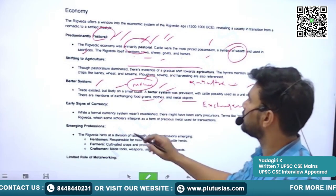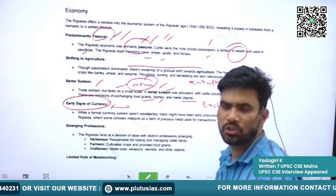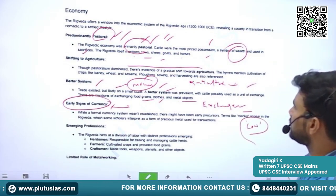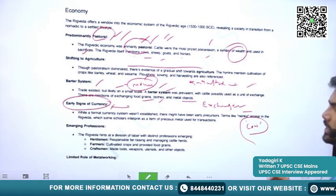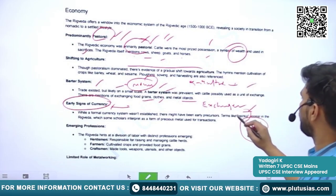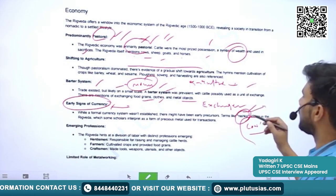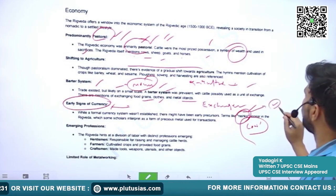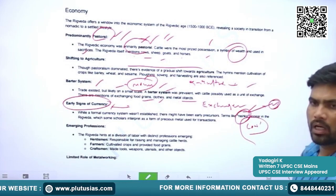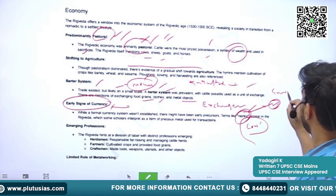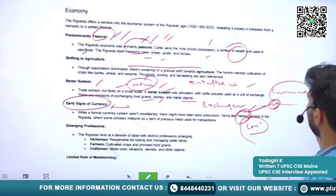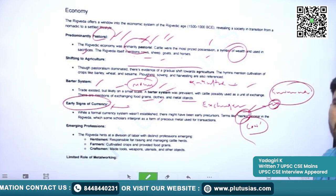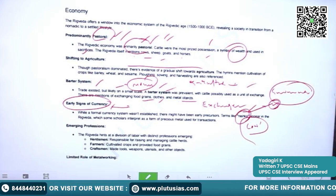There are early signs of currency — some experts say the cow itself was used as a currency. We also see certain terms like Nishka, which is a kind of jewelry. It is also called Suvarna Nishka, and some historians say it was used as a coin.